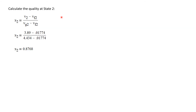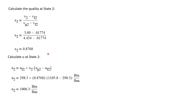Now I can calculate the quality at state two. Quality equals (V_2 minus V_f) divided by (V_g minus V_f), giving a quality of 0.8768. With that quality, the internal energy is U_f plus quality times (U_g minus U_f), and the internal energy at state two calculates to 1006.3 BTUs per pound mass.